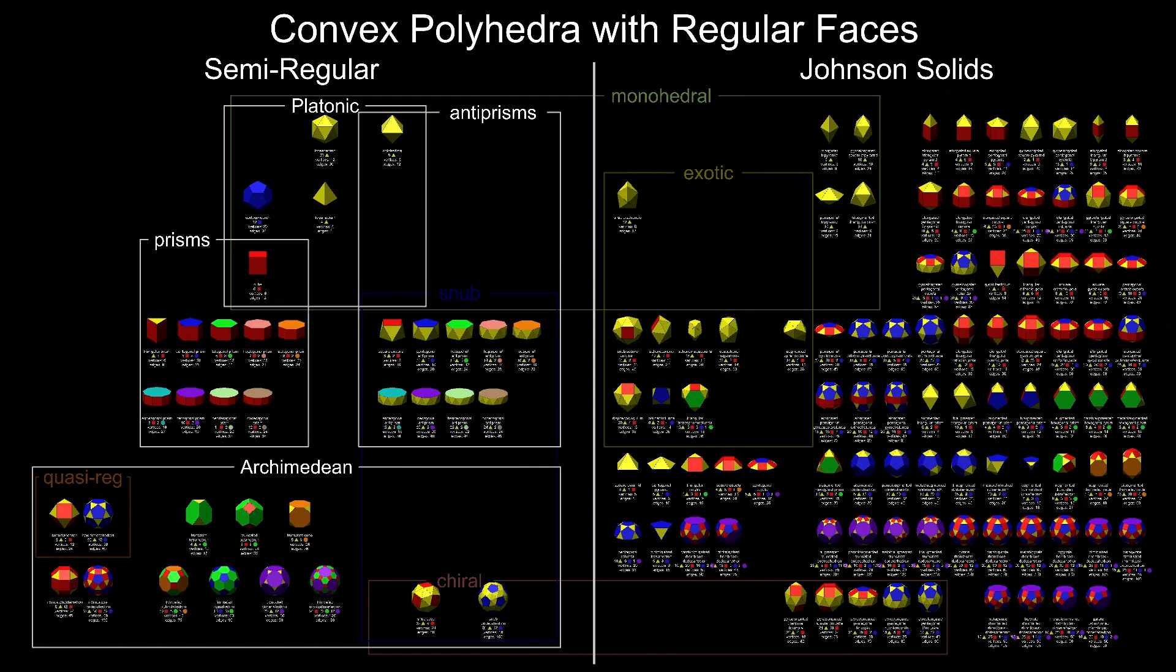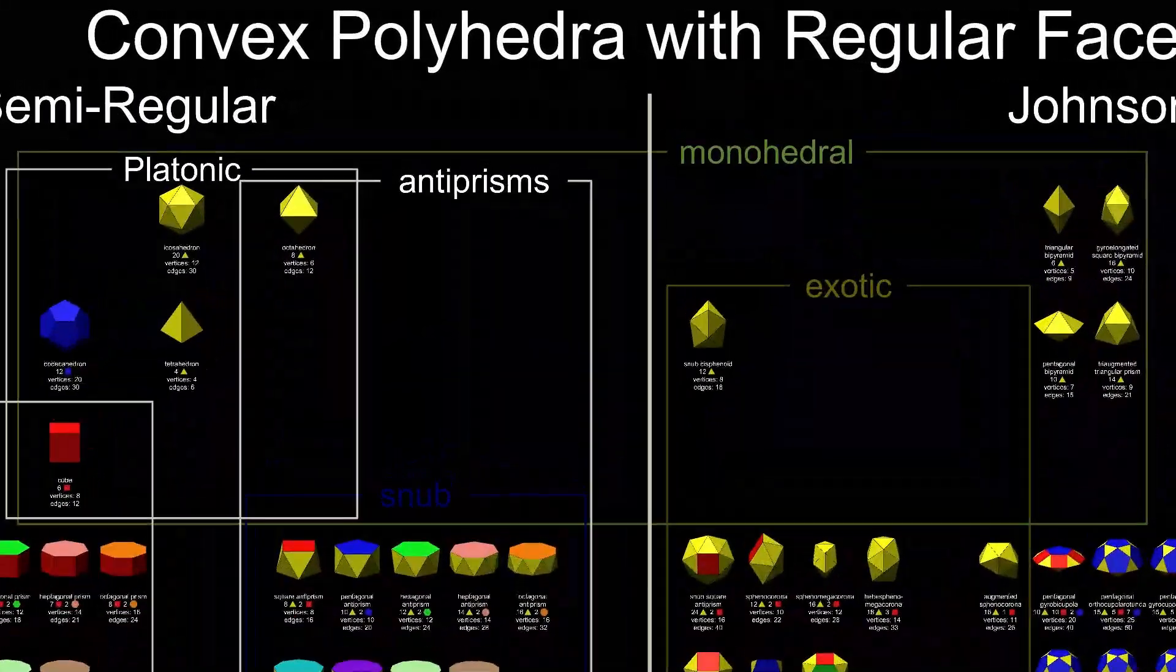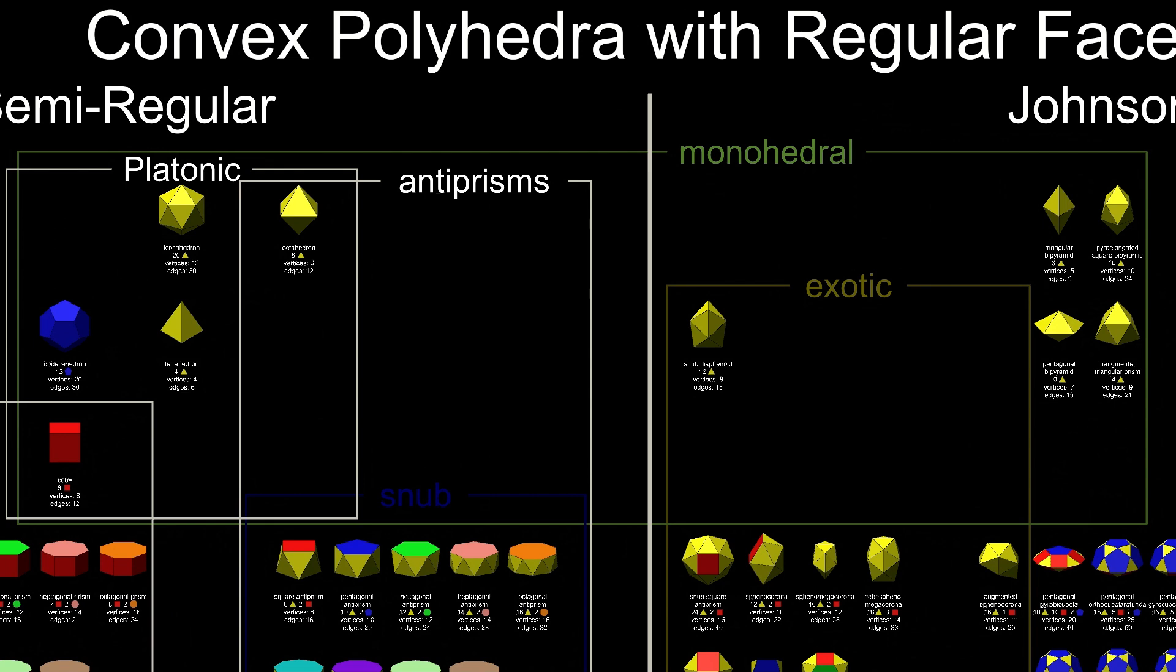Monohedral polyhedra are those where all faces are the same shape. The cube is the only one made from only squares, and the dodecahedron the only one with pentagons.